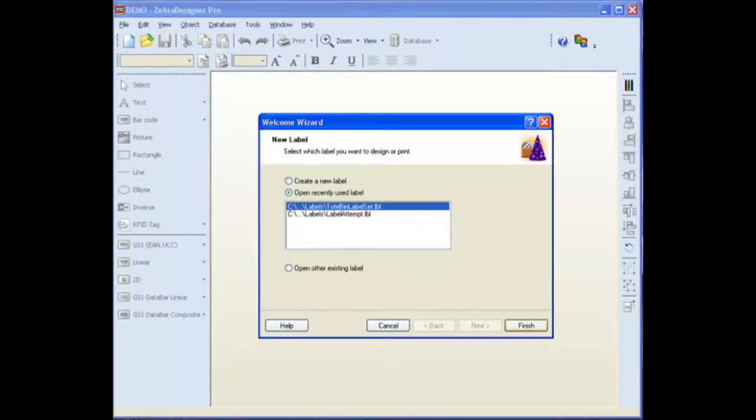Launch the Zebra Designer Pro software, or its demo. After the program is launched, we select tote bin label set dot lbl from the options presented. If this template is not shown in the recently used area, click open other existing label and locate the template file.